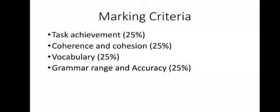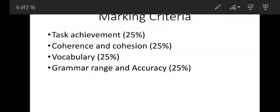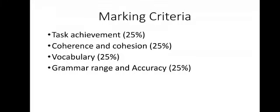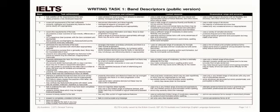Each of those criteria takes 25%. We will speak about them in detail in other lessons, but I want you to pay attention to the writing task 1 band descriptors, which is a public version. You can easily find it on the internet, download it, and get acquainted with the details. There is a description of each criterion starting from band 0 to band 9, and we will also discuss this later in another lesson.